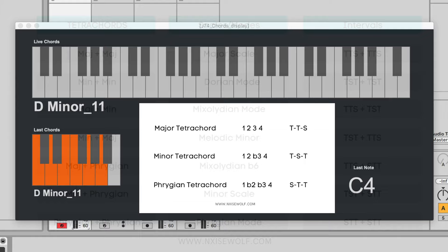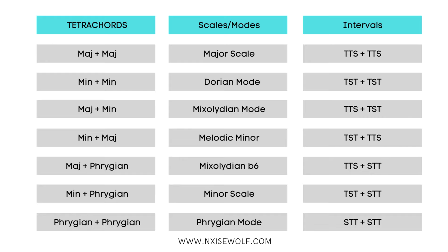As you can see, we can do a few combinations. Major + major = major scale. Minor + minor = Dorian mode. Major + minor = Mixolydian mode. Minor + major = melodic minor. Major + Phrygian = Mixolydian flat 6, which is actually one of the modes of melodic minor. Minor + Phrygian = natural minor scale. And Phrygian + Phrygian = Phrygian mode.